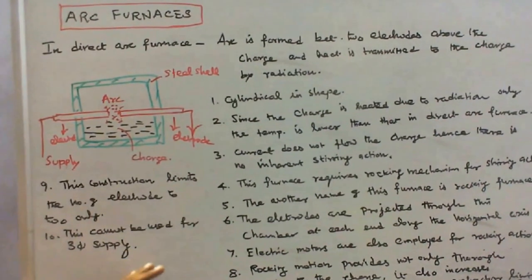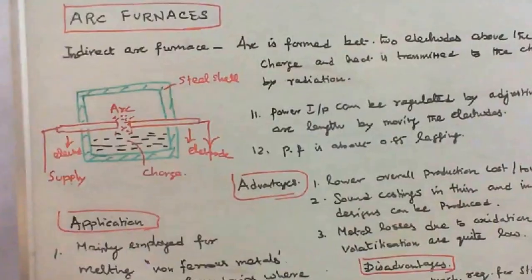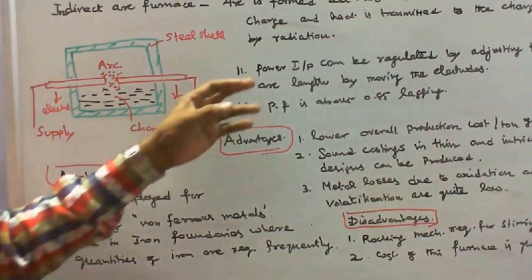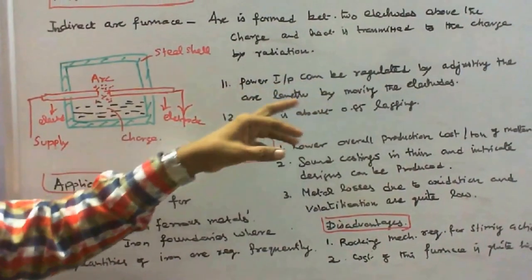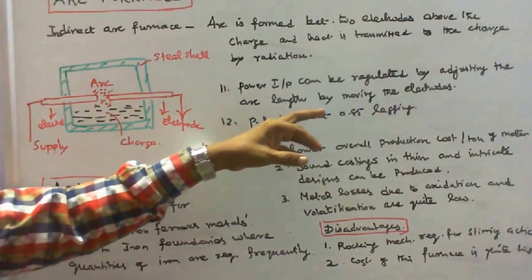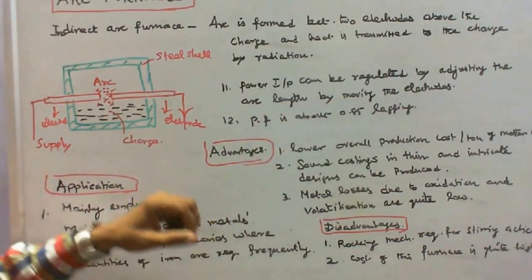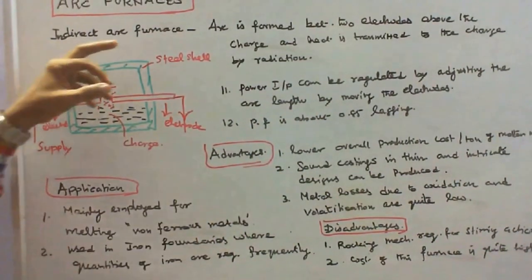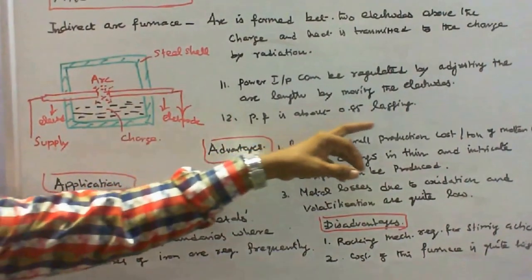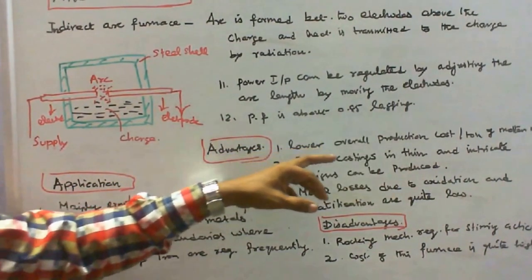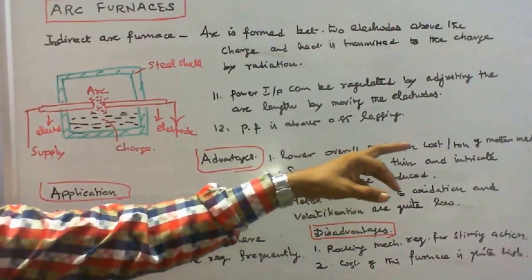This cannot be used for three-phase supply. Power input can be regulated by adjusting the arc length by moving the electrodes. The power factor of indirect arc furnace is about 0.85 lagging.